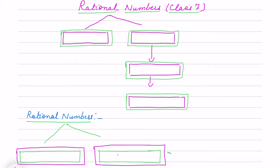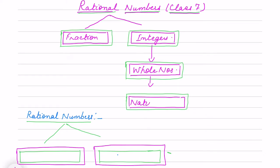Hello children, today I'm starting rational numbers for class seven. We have already done rational numbers, fractions, integers, whole numbers, and natural numbers. Fractions means any part, integers include positive and negative numbers.